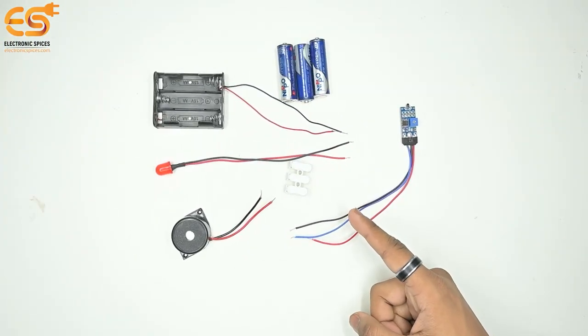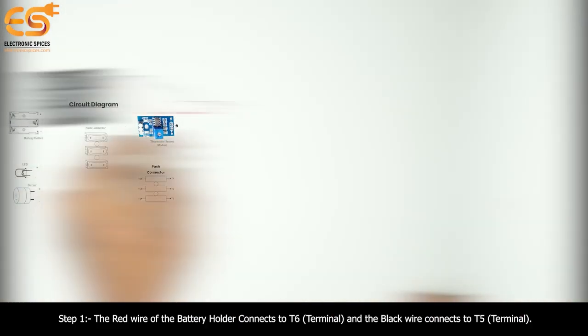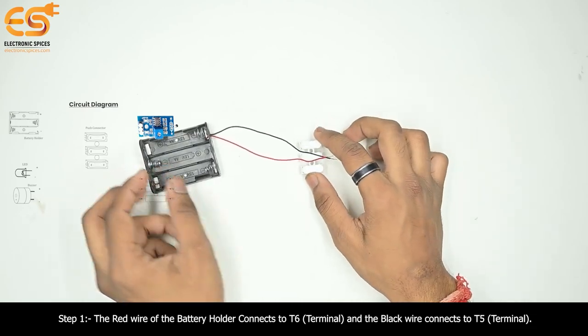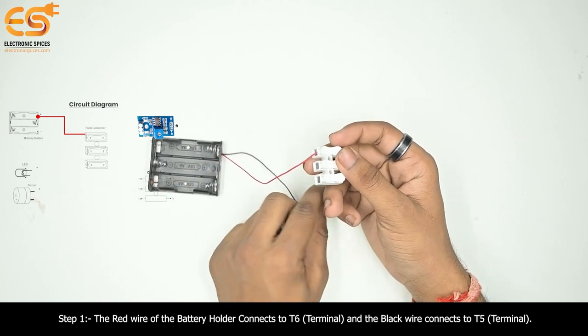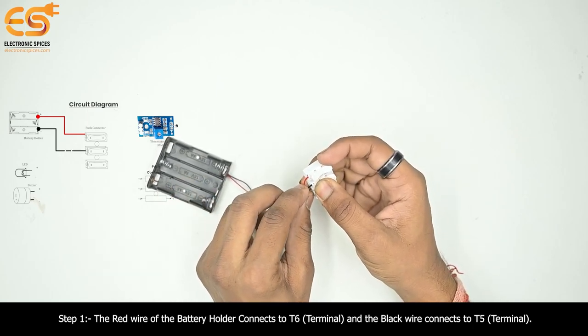Let's start to make our circuit. Step one: push connector and battery holder. The red wire of the battery holder connects to T6 terminal and the black wire connects to T5 terminal.